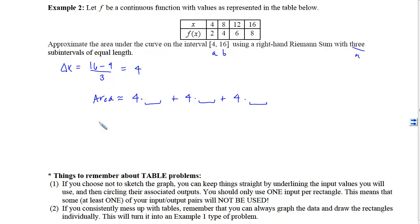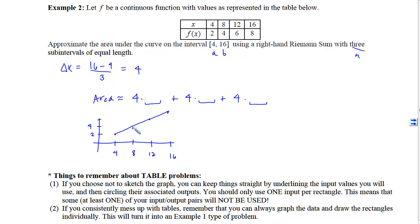Thinking graphically, at x equals 4 we have y equals 2; at x equals 8, y equals 4; at x equals 12, y equals 6; and at x equals 16, y equals 8. Using a right-hand sum, for the first sub-interval we use the right x-coordinate, which is 8, generating height 4. So the first rectangle's area is width 4 times height 4.